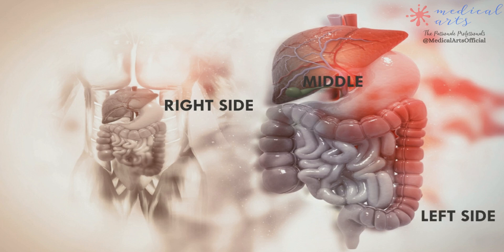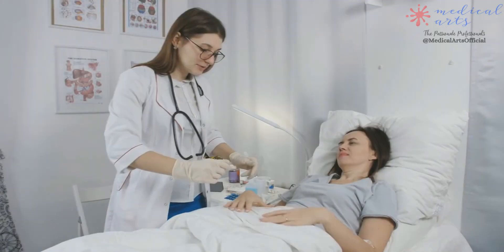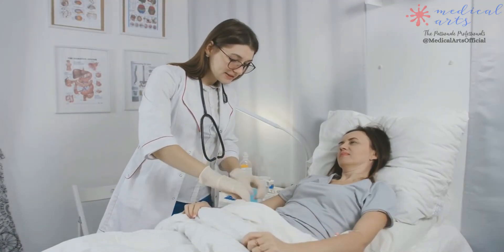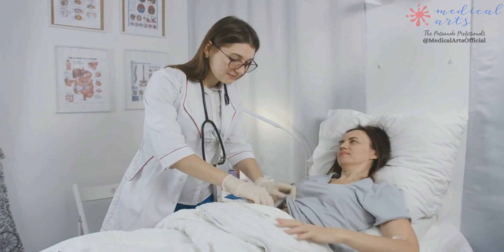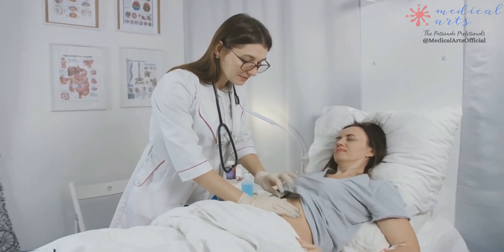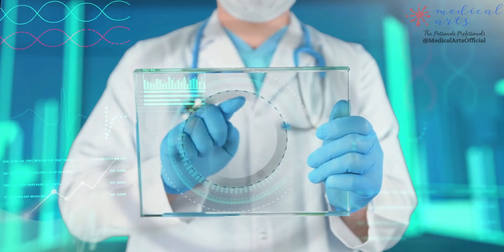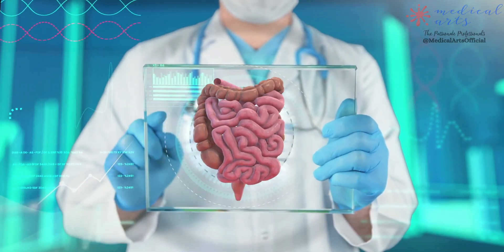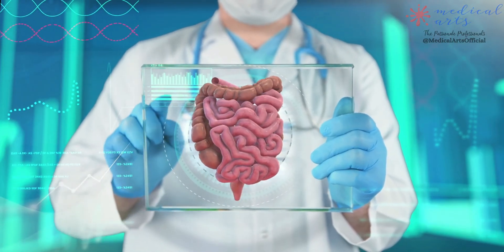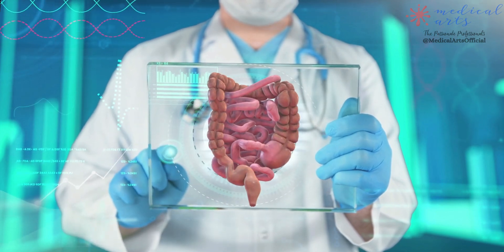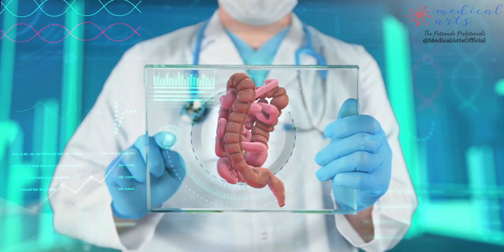In less common cases, diverticulitis can develop on the right side or in the middle of the colon. Diverticulitis most commonly develops on the sigmoid part of the colon. Performing an adequate investigation is crucial, so your doctor can differentiate the cause of your symptoms and avoid severe complications due to perforated diverticulitis.